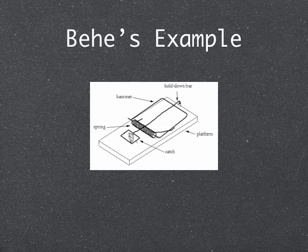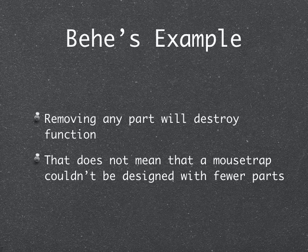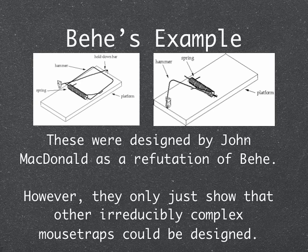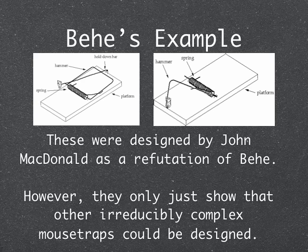The example Michael Behe used is a mousetrap. It has five parts, and all of them are necessary for contributing to the basic function — if you remove any given part, the whole thing will cease to function. That does not mean that a mousetrap couldn't be designed with fewer parts. There are two mousetraps designed as a refutation of Behe's proposal. However, they only show that other irreducibly complex mousetraps could be designed. These mousetraps were not made by removing a part from an irreducibly complex machine — they were made by remanufacturing parts and essentially creating new parts and new irreducibly complex machines.